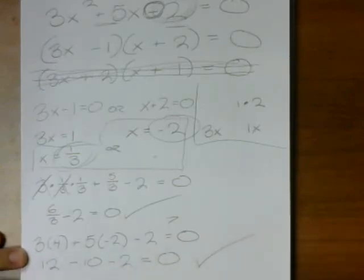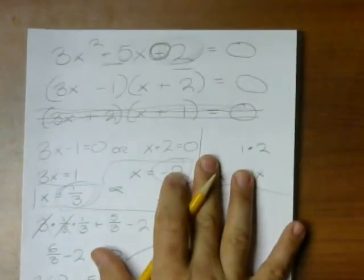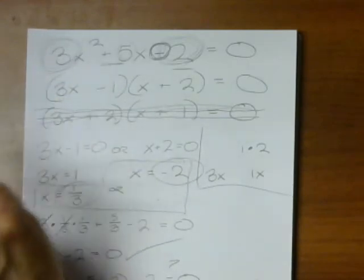So this works. And that's an example of factoring when the coefficient of x squared doesn't happen to be 1.